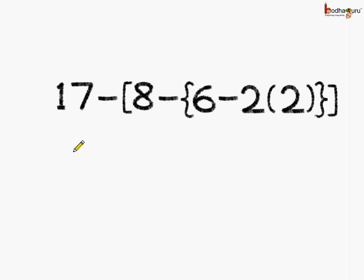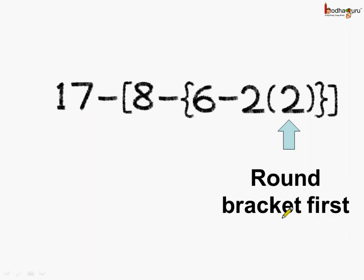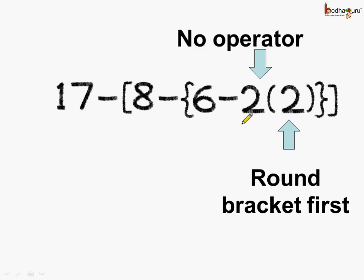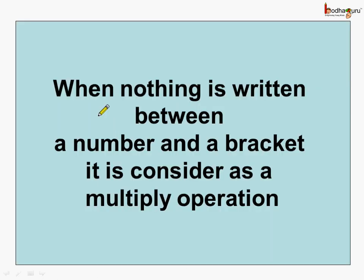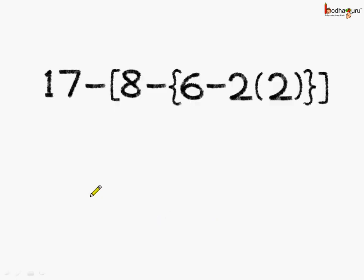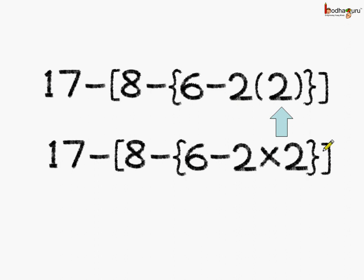Now coming to this expression — these are the round brackets which should be solved first. But if we see, there is no operator between 2 and this bracket. When nothing is written between a number and a bracket, it is considered as a multiplication operation. So we need to do 2 multiplied by 2.